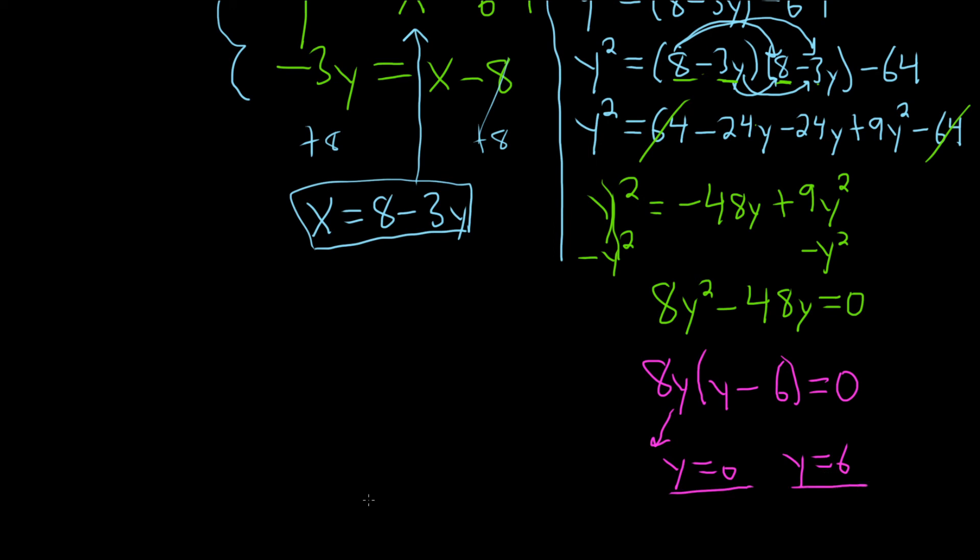So now what we have to do is we have to take these and plug them back in somewhere. I think this might be the easiest place. And you have to do one at a time because your final solution is an ordered pair. So it's really important to do one at a time. So when y is equal to 0, we have x equals 8 minus 3 times 0. So x equals 8 minus 0. So x equals 8.